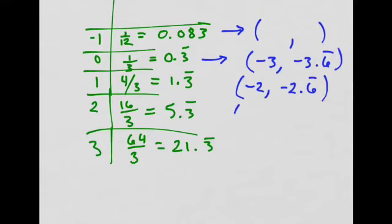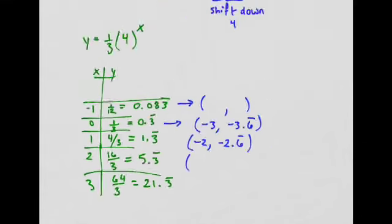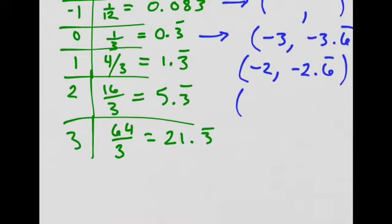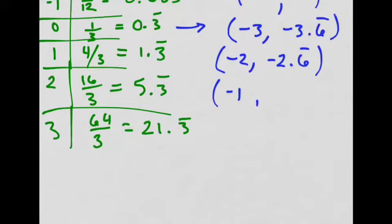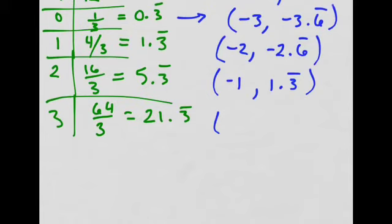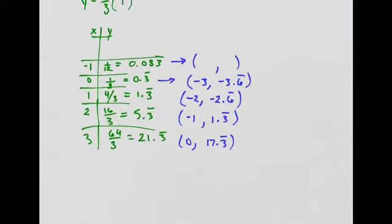And then I just keep going. Shift left 3. So that would give me negative 1. 2 minus 3 is negative 1. And 5.3 repeating minus 4, that's going to be 1.3 repeating. And so on, you just keep going. This would be minus 3, that would be 0. And 21 minus 4, 21.333 is 17.3 repeating. And it goes on and on.